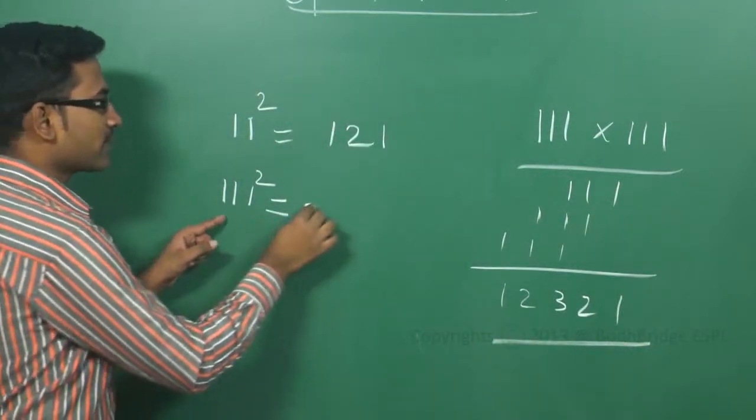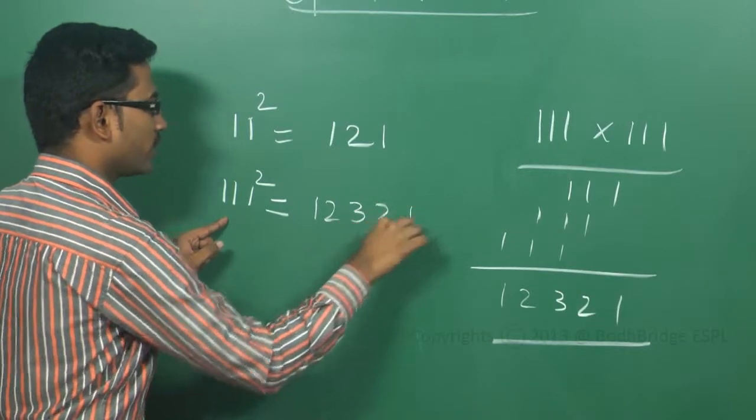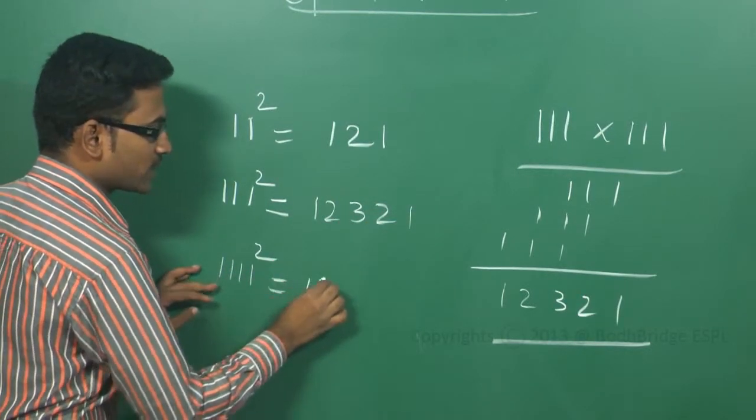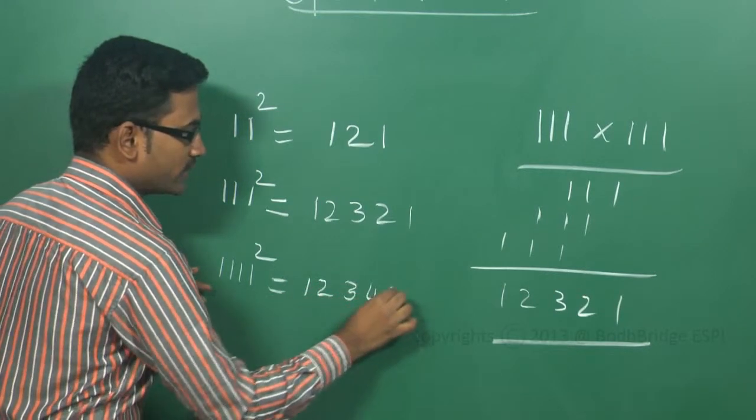So 111 square can be written as 1, 2, 3, 2, 1. Four 1s can be written as—4 ones square can be written as 1, 2, 3, 4, 3, 2, 1.